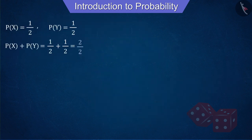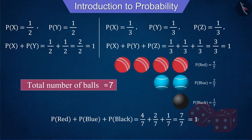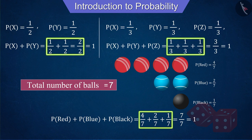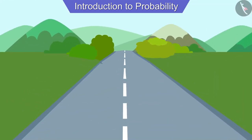Let's understand one more important thing. If we add the probabilities in the condition of two roads we get one. Similarly, in the case of three roads and balls, adding all the probabilities also gives one. Therefore we can say that by adding all probabilities of an event we always get one.